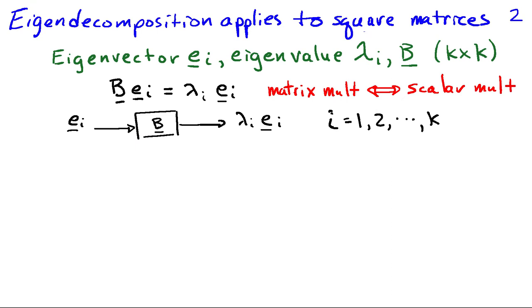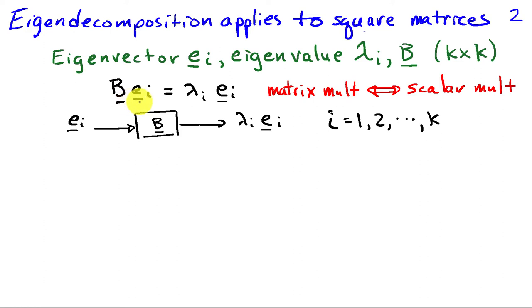Eigendecomposition is a concept that applies to square matrices. We're going to consider a matrix B, which is k by k, that'll have an eigenvector E_i, which is a k by one vector, and an eigenvalue lambda_i, which is a constant. The relationship between these quantities is that if I take the matrix B and multiply it times the eigenvector, I get the eigenvalue — a scalar — times the eigenvector.